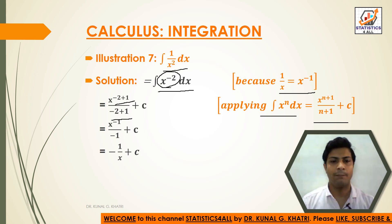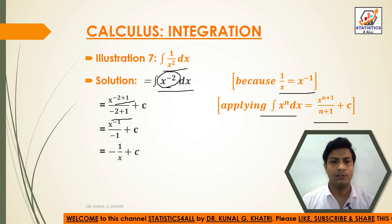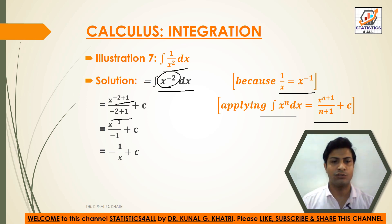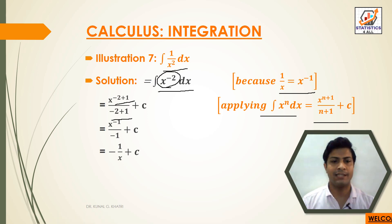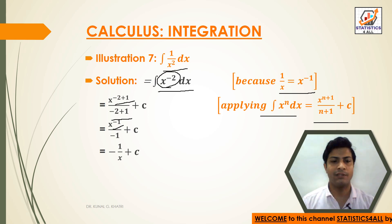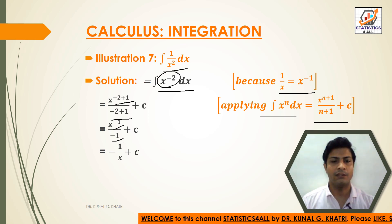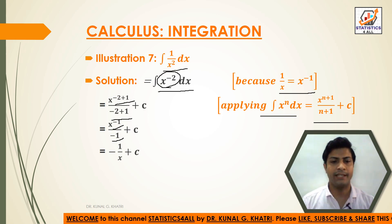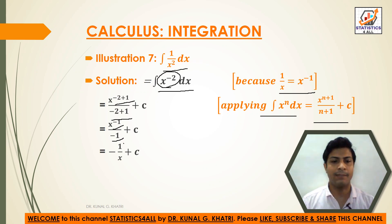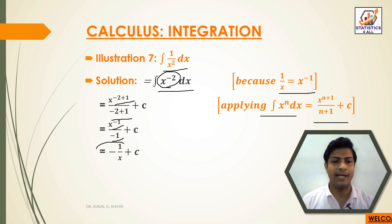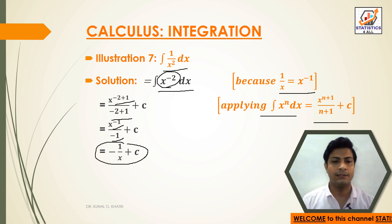By applying this formula, we have x to the minus 2 plus 1 divided by minus 2 plus 1, plus c. So x to the minus 2 plus 1 equals x to the minus 1, and minus 2 plus 1 equals minus 1. Therefore, we can write the answer as minus 1 upon x plus c.